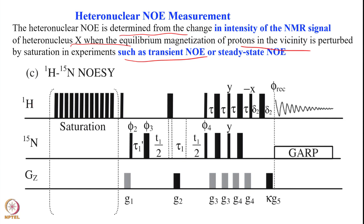After saturating the proton, we look at the effect of that saturation on the relaxation rate of the nitrogen. Starting with proton magnetization, we transfer to nitrogen, then encode the nitrogen frequency during T1/2 periods while decoupling the proton. Then we transfer back to proton, perform sensitivity enhancement with the PEP sequence, and record on the proton while decoupling the nitrogen. Gradients are used for coherence selection and spurious magnetization separation.